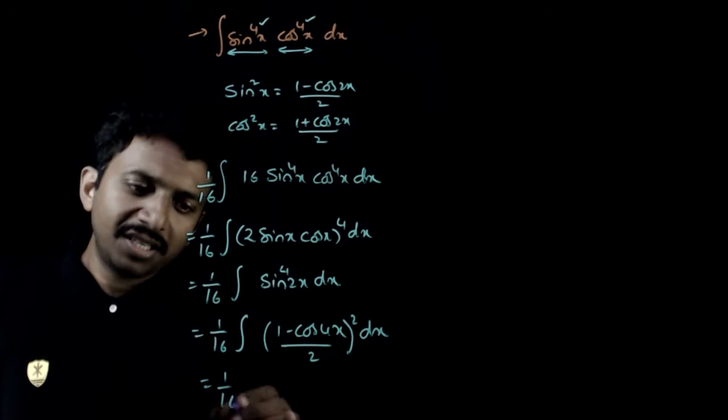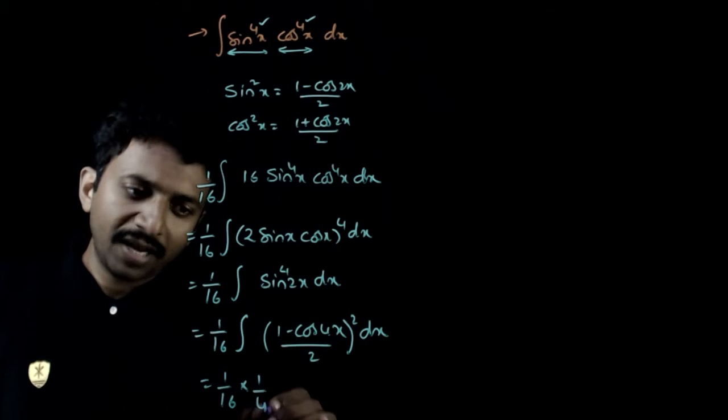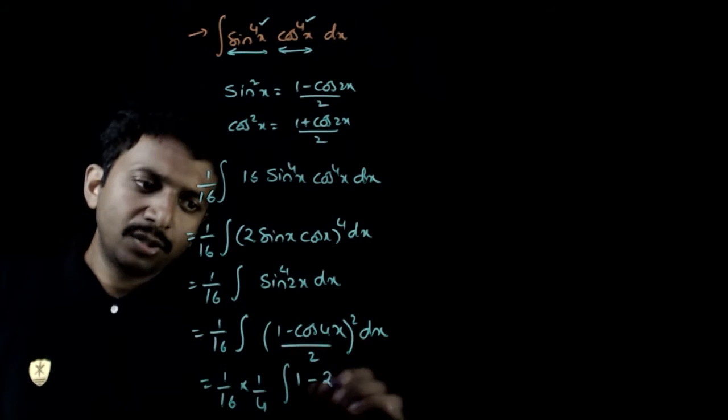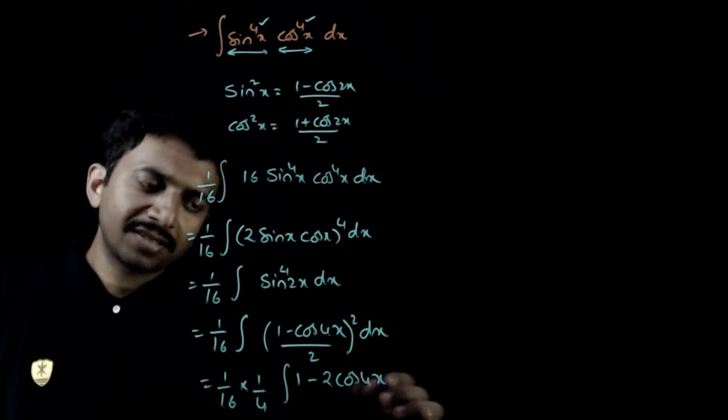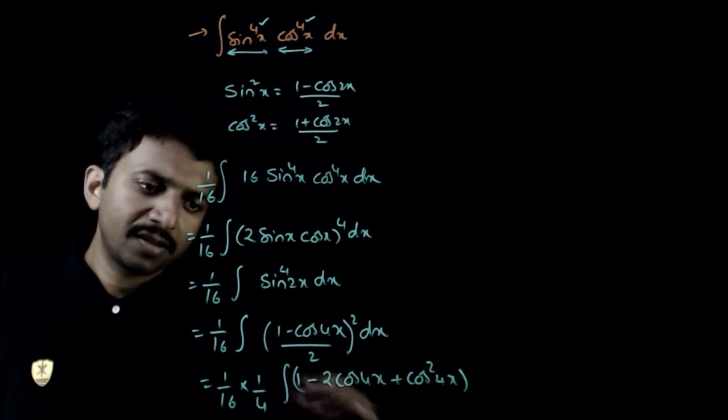So 1 minus cos 4x by 2 is sin square 2x whole square. That is equal to 1 by 16 times, 1 by 4 will come out. Integration of, if you expand this, 1 minus 2 cos 4x plus cos square 4x dx.